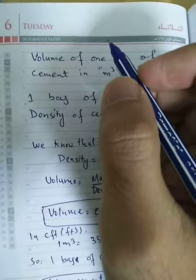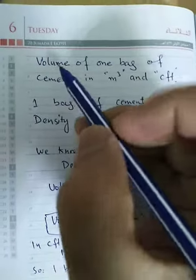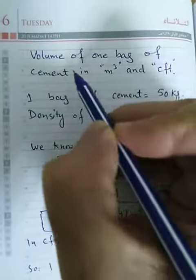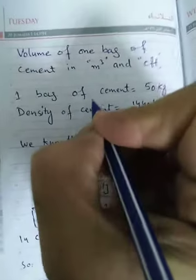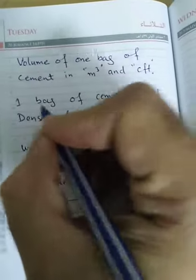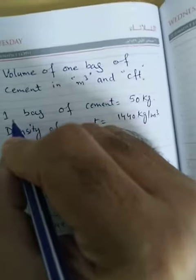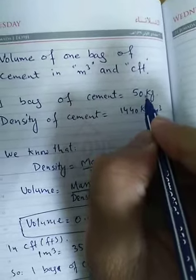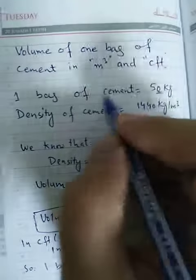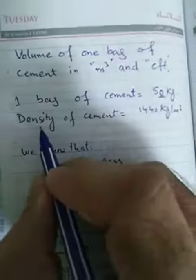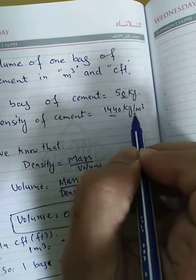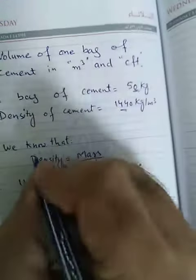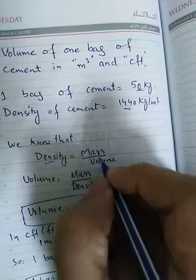Hi friends, how are you today? I'm going to show you the volume of one bag of cement in meter cube and CFT. Let's start. As you know, one bag of cement is equal to 50 kg, and we also know that the density of cement is 1440 kg per meter cube.